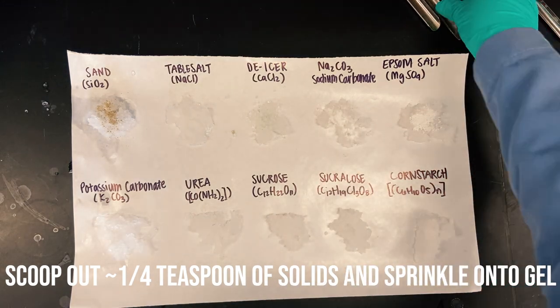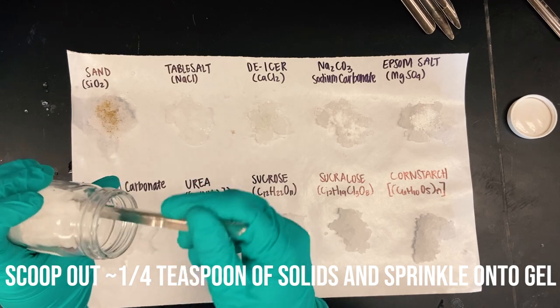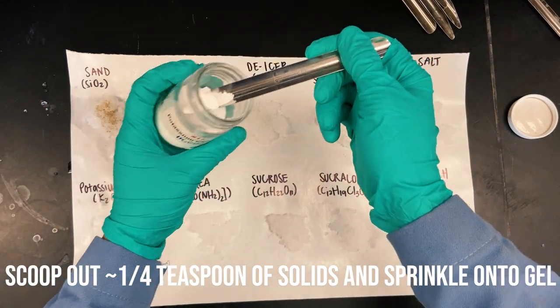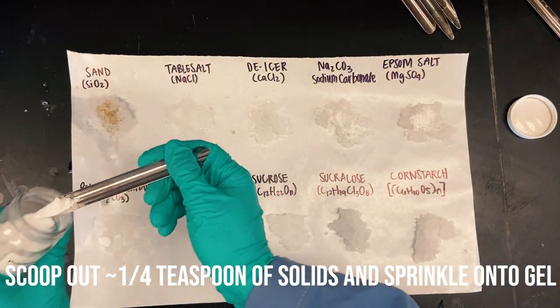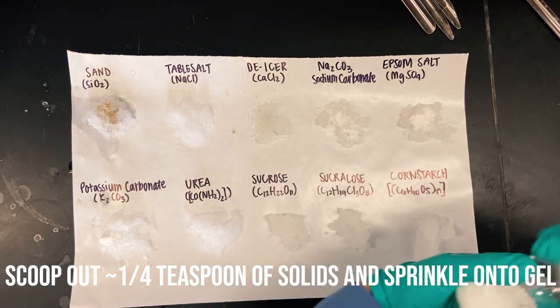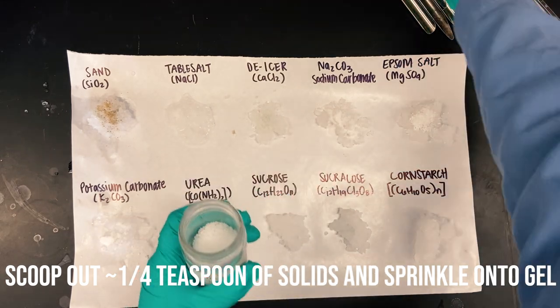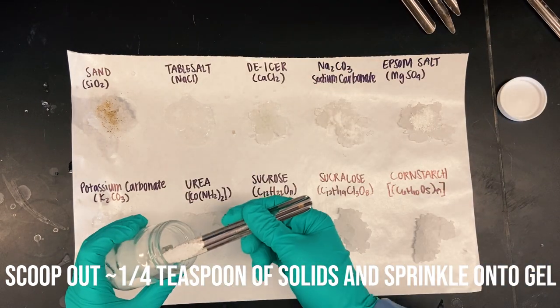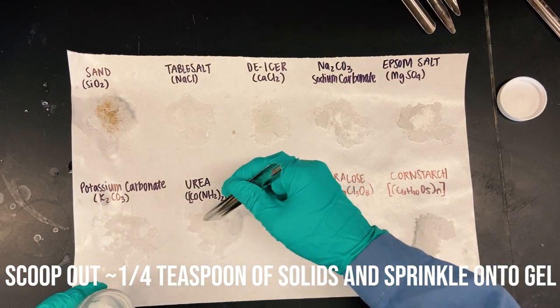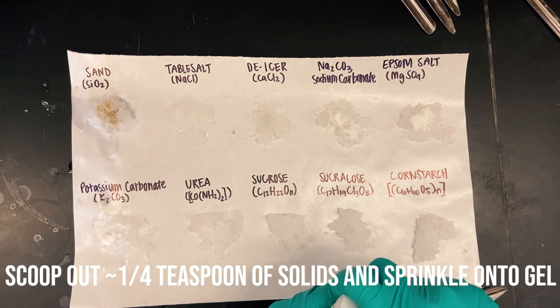And potassium carbonate, that's K2CO3. And then urea, that is CO(NH2)2. So we're going to let those sit on there for a while and examine the results.